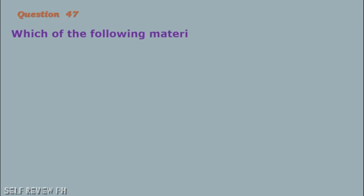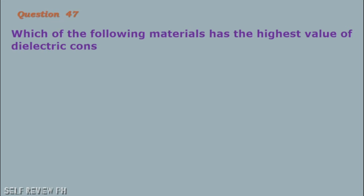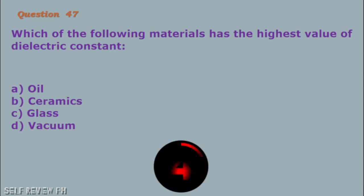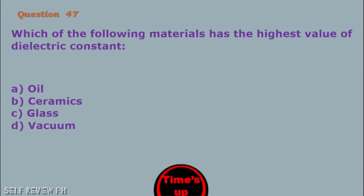Question number 47: Which of the following materials has the highest value of dielectric constant? A. Oil B. Ceramics C. Glass D. Vacuum. The correct answer is letter B, ceramics.